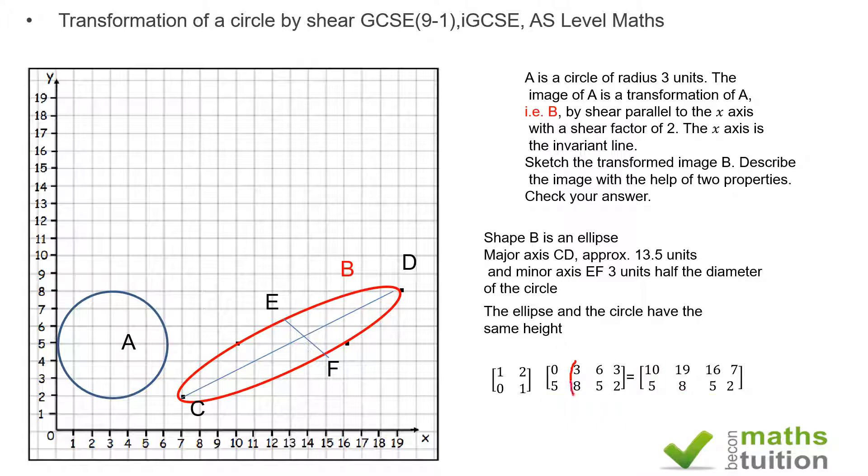What about this one here? 1 times 3 is 3, 2 times 8 is 16, 16 plus 3 is 19—hence 19 there. For this one, 1 times 6 is 6, 2 times 5 is 10, 10 plus 6 is 16—hence 16 there. For the last point, 1 times 3 is 3, 2 times 2 is 4, 4 plus 3 is 7—hence that one there. So that's checked.